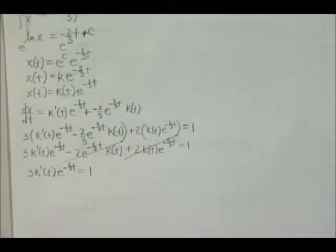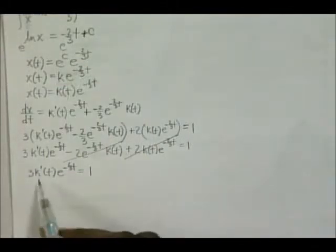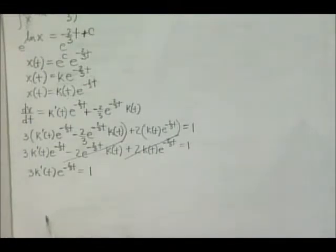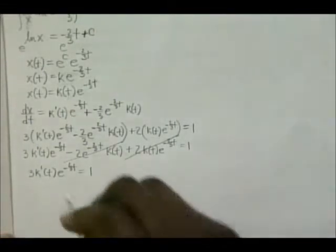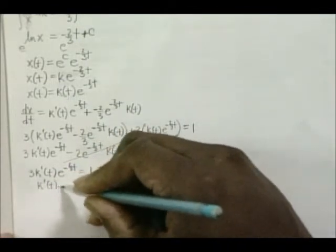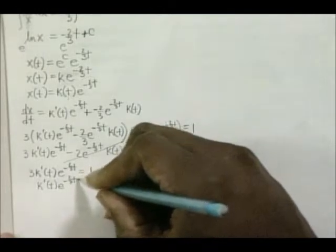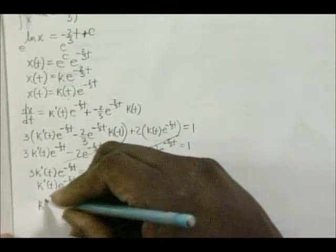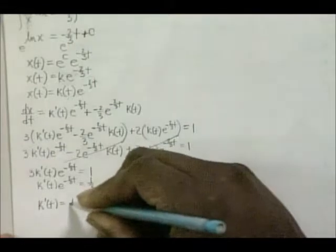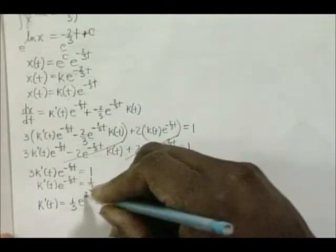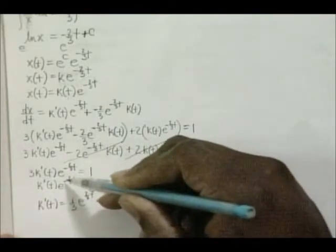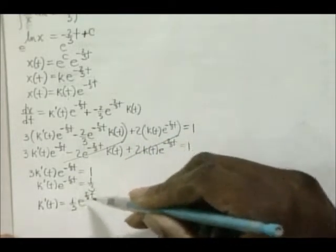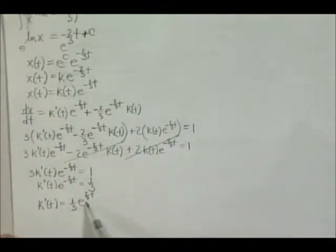Dividing both sides by 3 gives k'(t) e^(-2/3 t) equals 1/3. Then dividing by e^(-2/3 t) — which means moving it to the numerator and changing the sign on the exponent — gives us k'(t) equals 1/3 e^(2/3 t).